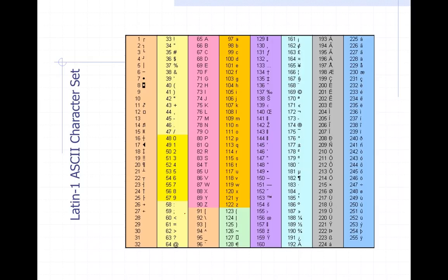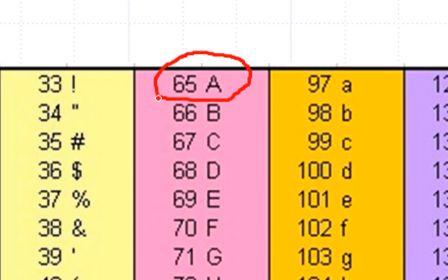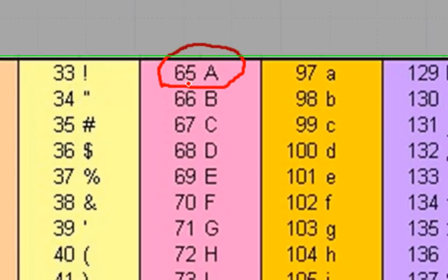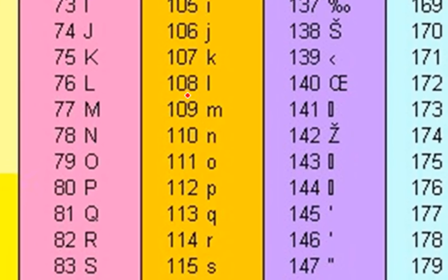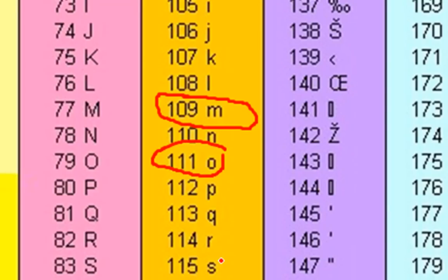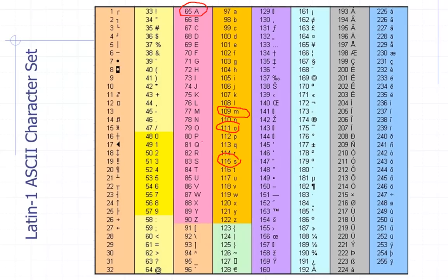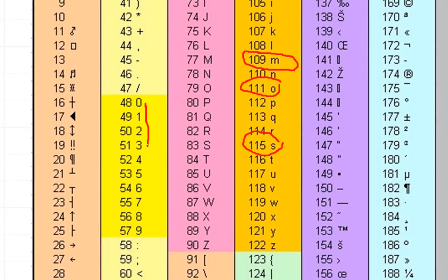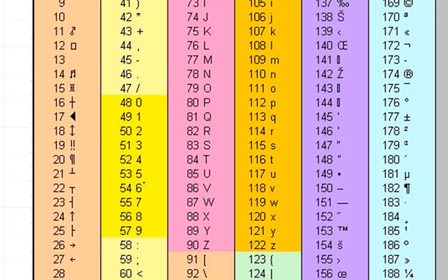On the ASCII table you can see a map of every single character in the English language to an actual number. My name starts with a capital A — looking at the table, A is represented by 65. The next letter of my name is lowercase m, represented by 109. The lowercase o is represented by 111, and the lowercase s is represented by 115. Notice that the digits zero through nine are also remapped to different numbers for consistency — for example, the character '5' is actually 53 in the remapping, because it's just a character on the screen, not mathematics.